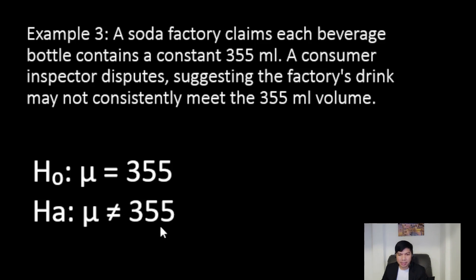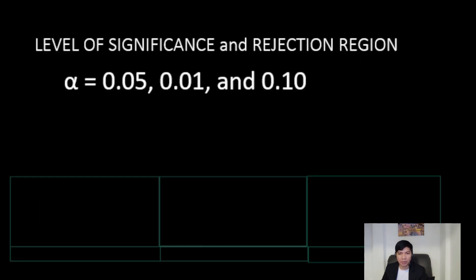In hypothesis testing, a level of significance is crucial and is represented by the Greek symbol alpha. The choice of this significance level depends on the research nature, with commonly used values being α as 0.05, 0.01, and 0.10.